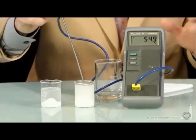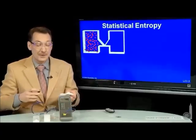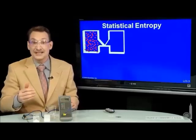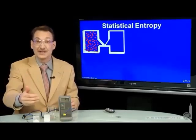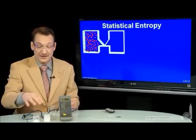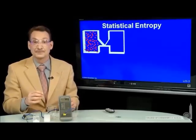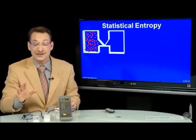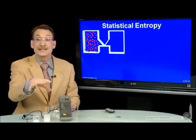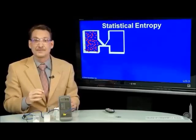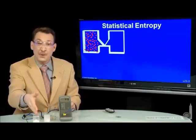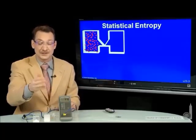Now both of these chemical reactions, the dissolving of these salts, proceeded spontaneously. The natural direction was forward towards dissolving the salts, towards the salts in aqueous solution. But the energy was not a good predictor. One absorbed energy as it proceeded forward; the other released energy. So there has to be another thermodynamic parameter that will predict what's the forward direction for chemical reactions.